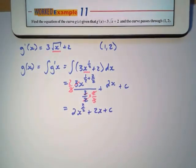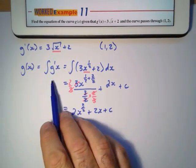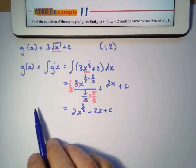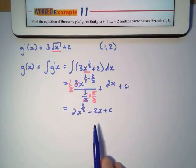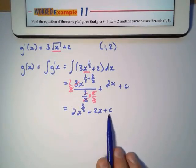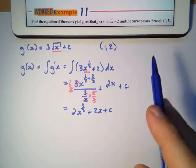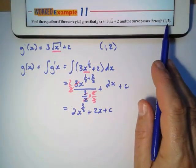The problem now, however, is that this is the general equation. We don't know where this equation goes. All I know, we have plus C. But they give us a point that goes through the point.